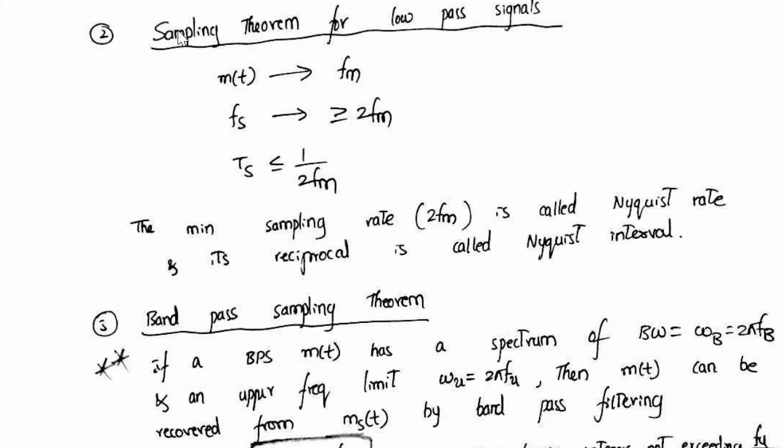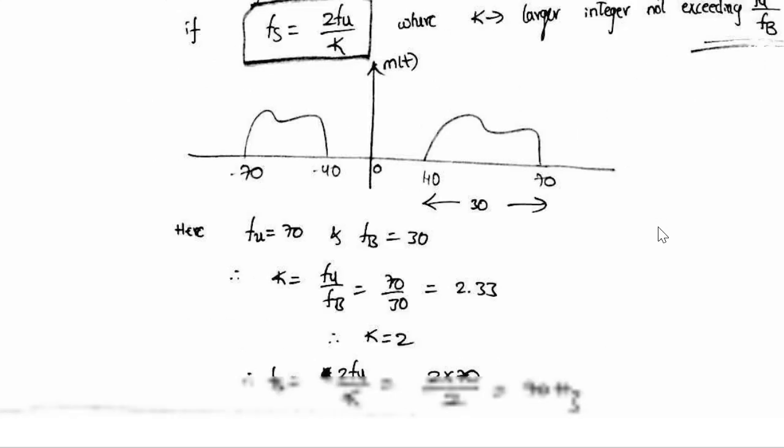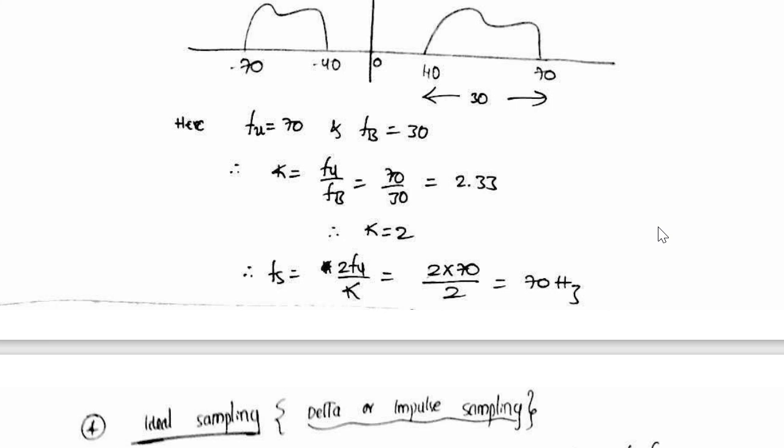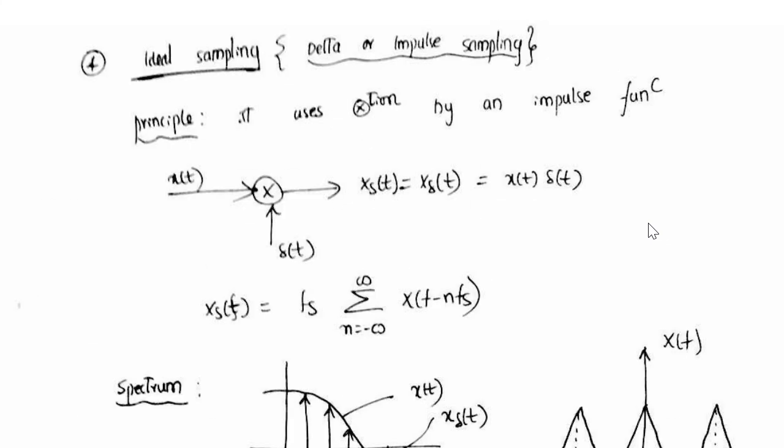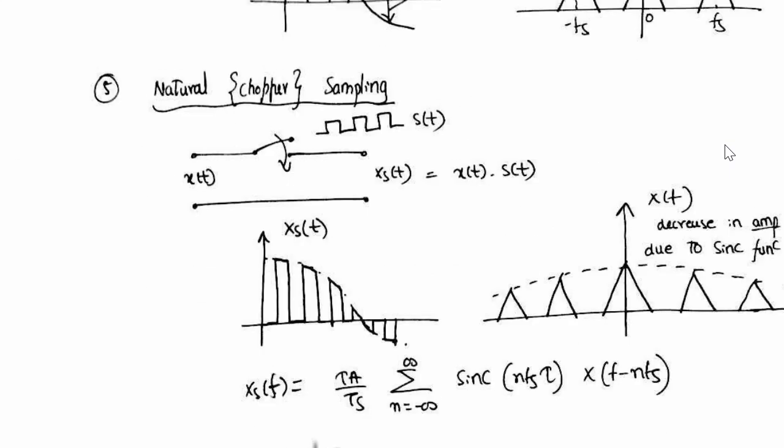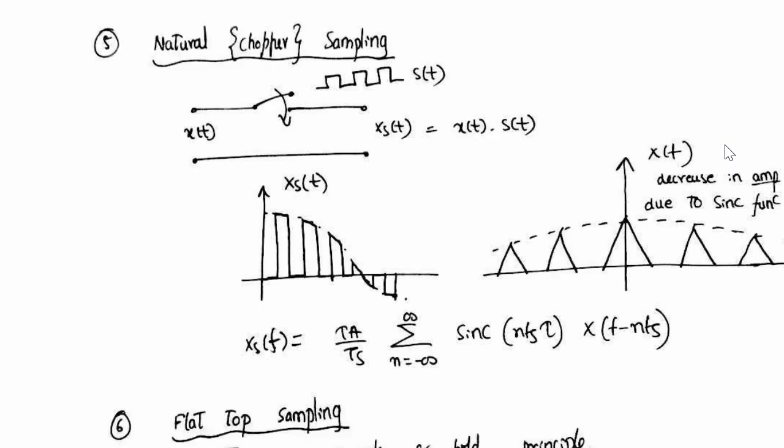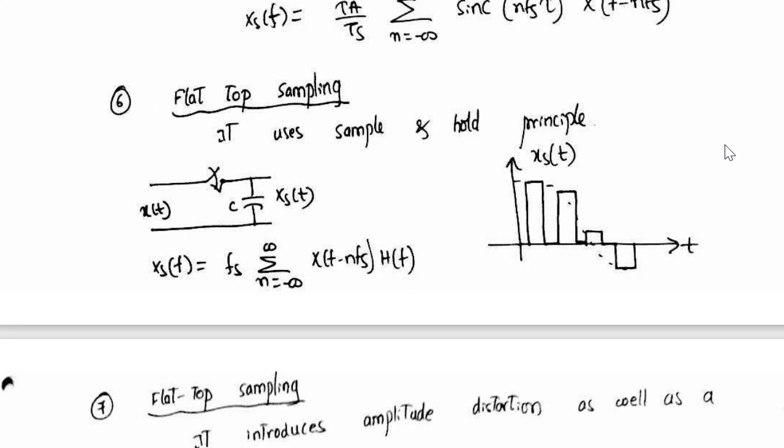So these are the short formulas related to sampling theorem, bandpass sampling theorem. So ideal sampling concept is present over here, then comes the natural sampling, then comes flat top sampling.